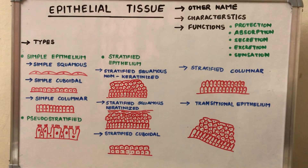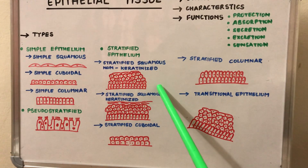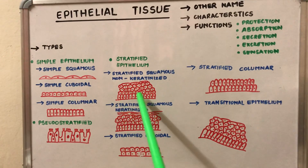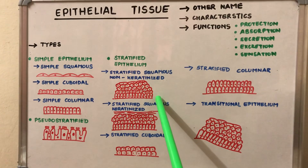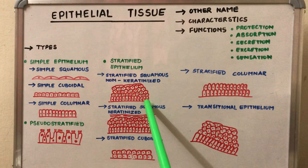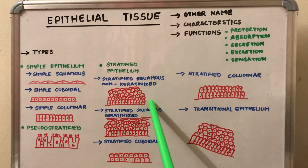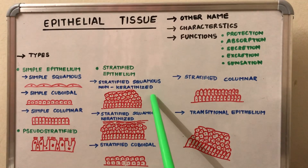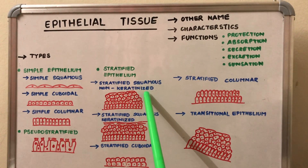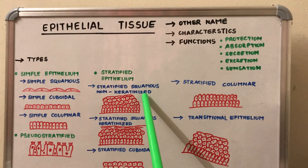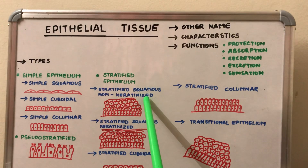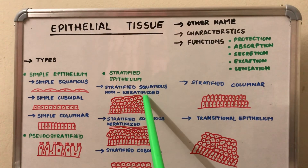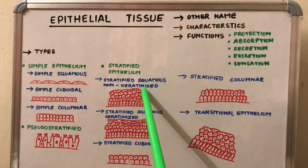First, we will discuss the non-keratinized stratified squamous epithelium. It is made up of five to six layers of cells. The basal layer, near the basement membrane, is a single layer of columnar cells. Above that are two to three layers of polygonal cells, and on top is the superficial layer of non-keratinized squamous cells.